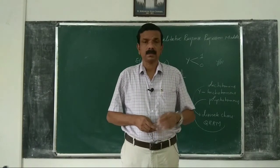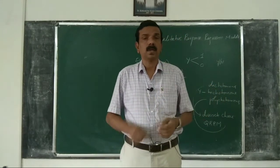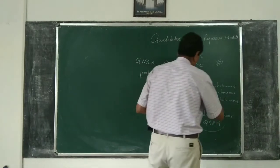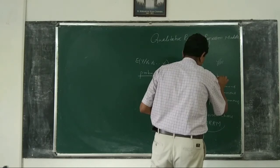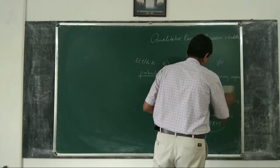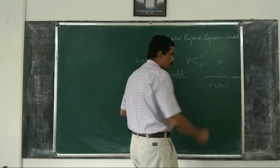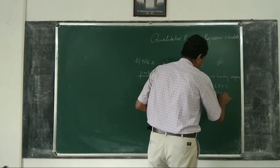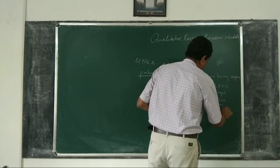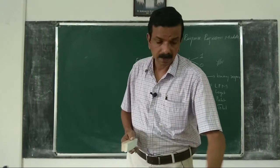Initially we start with binary or dichotomous models in which Y takes only two values. There are four approaches to study binary or dichotomous models: the Linear Probability Model (LPM), the logit, the probit, and the tobit.